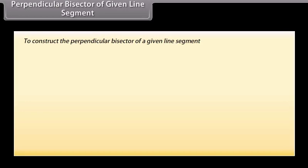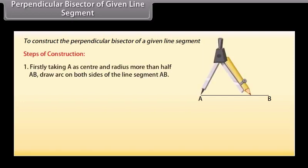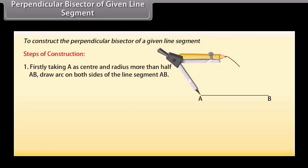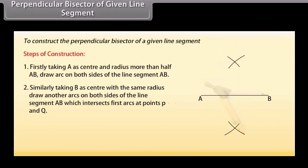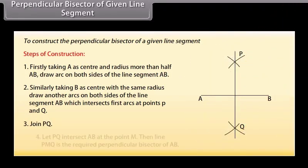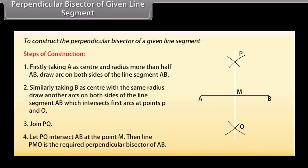Perpendicular bisector of a given line segment. Let us take a line segment AB. We want to construct its perpendicular bisector. Steps of construction: Firstly, taking A as center and a radius more than half AB, draw arcs on both sides of the line segment AB. Similarly, taking B as center and with the same radius, draw arcs on both sides of AB which intersect the first arcs at points P and Q. Now join PQ. Let PQ intersect AB at the point M. Then line PMQ is the required perpendicular bisector of AB.